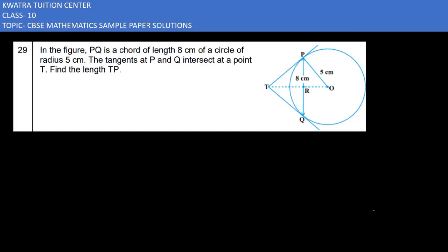Now what do you need to find out here? We need to find TP. First, note that the radius PO is 5. Similarly, since OT is a perpendicular bisector of PQ and PQ is 8 cm, it bisects PQ, meaning PR and RQ are each 4 cm. Now we also need to find RO.